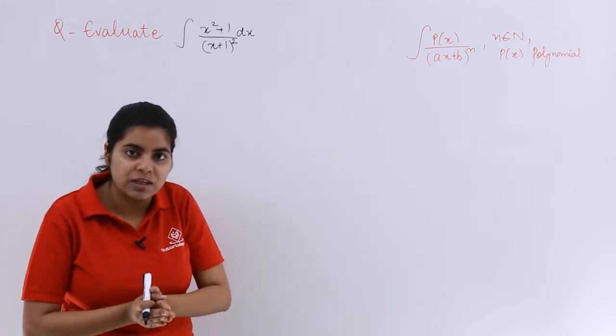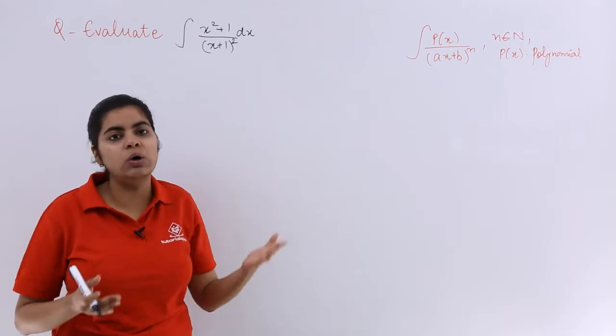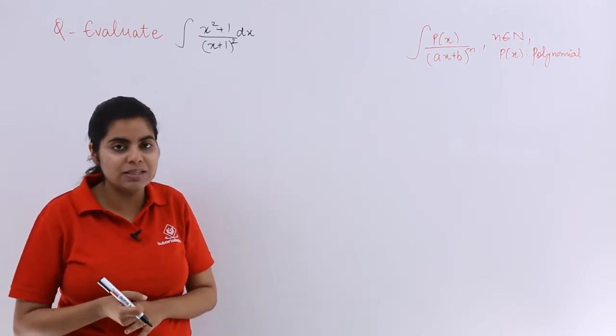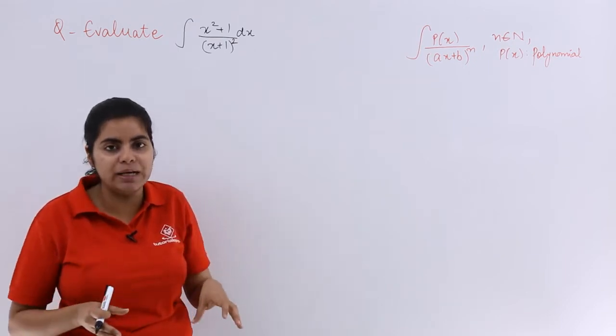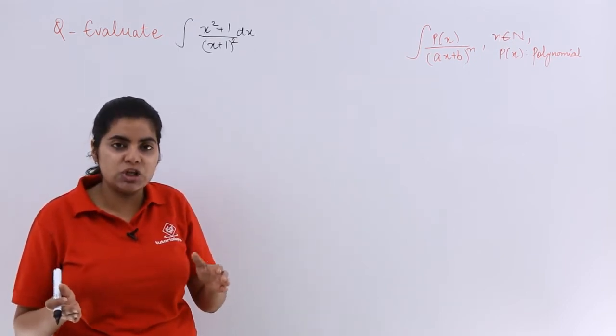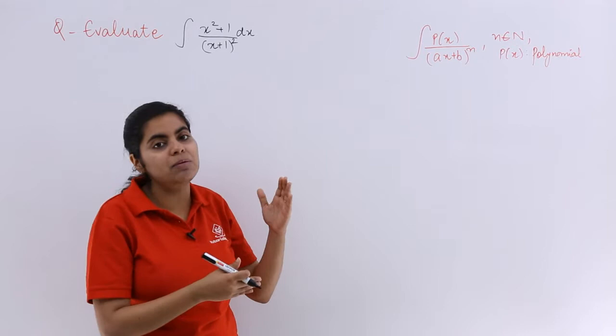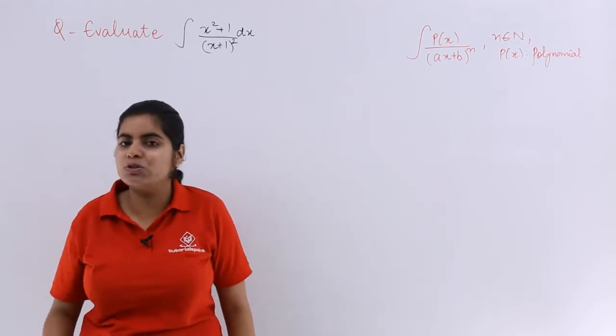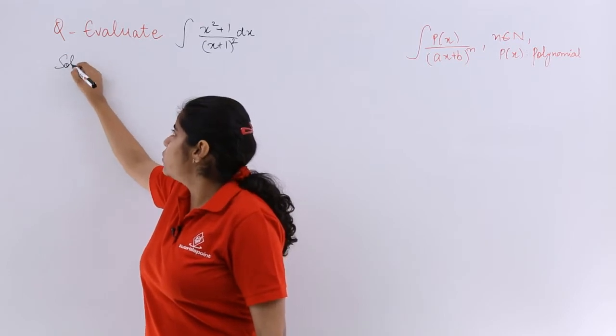Now if that 2x can be introduced somehow in the numerator, that will be very beneficial to us. So what we have to do in such type of questions? Whatever the denominator is there, try and make sure that something or the other can be imposed as the same in the numerator too. How to do it, I am going to tell you in the form of solution.